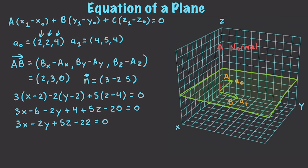And then we can get our final equation for our plane, which is 3X minus 2Y plus 5Z is equal to 22. Okay. So that is how you can create an equation for a plane with only the normal vector, as well as a point on the plane.